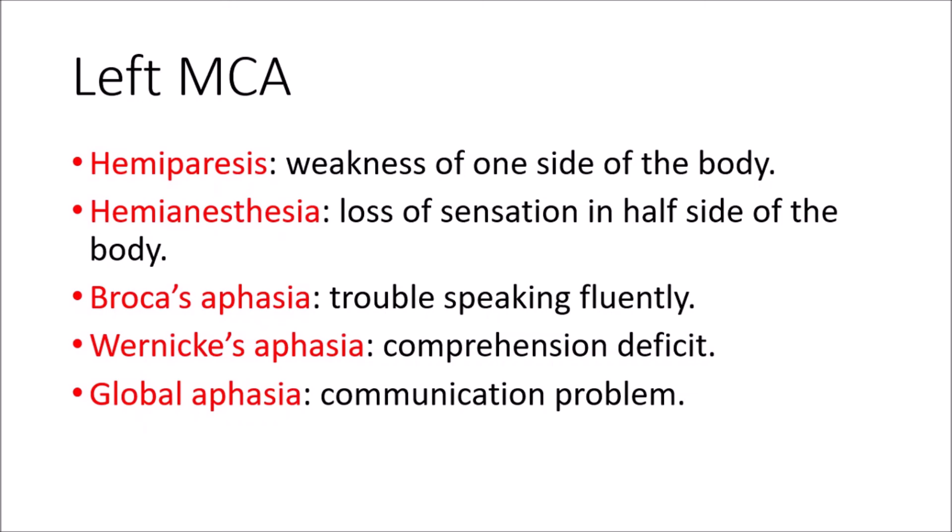Another is global aphasia. In global aphasia, a person can only say a few words and can't communicate properly. They can write or speak but very little — they cannot speak in a fluent manner. When the left side of the hemisphere is affected, it controls all language including both Broca's and Wernicke's areas. When both are affected, the person with global aphasia can't communicate properly at all.